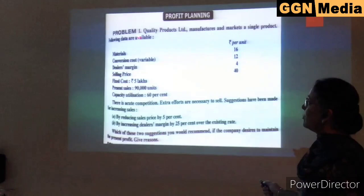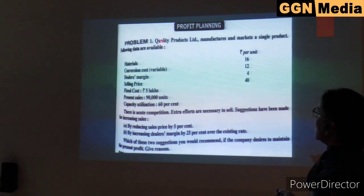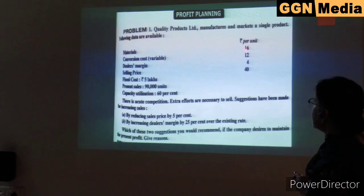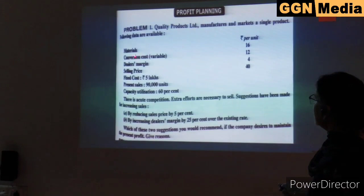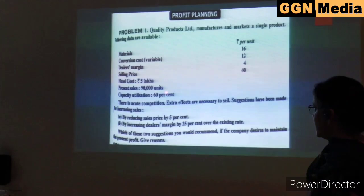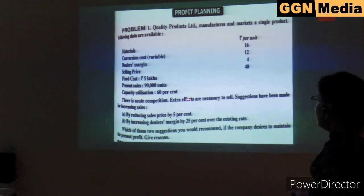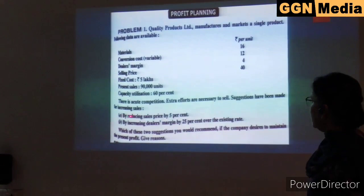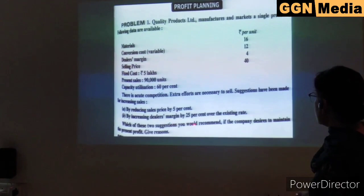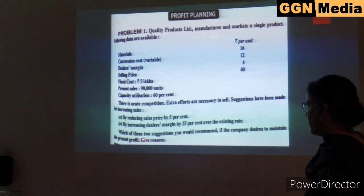Let me illustrate with a practical problem — Problem 1 from your book. Quality Products Limited manufactures and markets a single product. Data: materials 16 rupees per unit, conversion cost (variable) 12 rupees per unit, dealer's margin 4 rupees, selling price 40 rupees, fixed cost 5 lakhs, present sales 90,000 units, capacity utilization 60%. Due to acute competition, two suggestions are proposed: (1) reducing sales price by 5%, or (2) increasing dealer's margin by 25%. Which suggestion maintains present profit?